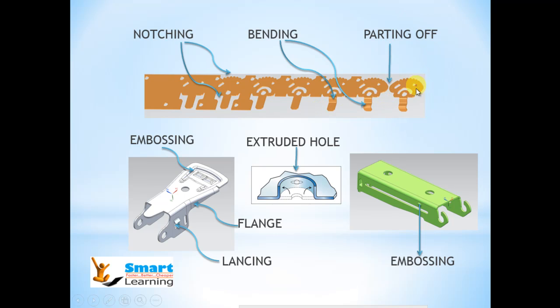You can also see a parting off operation. Parting is different from cutoff operations. In parting, the punch will have the profile on both sides, left and right side. But in cutoff operation, the punch will be straight and it just cuts the part.